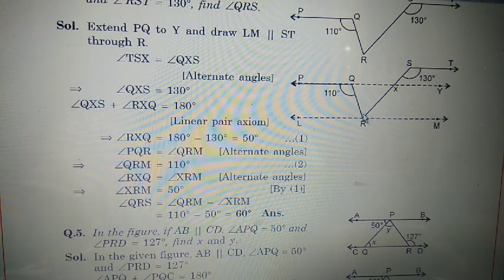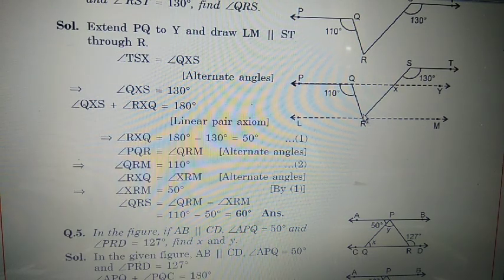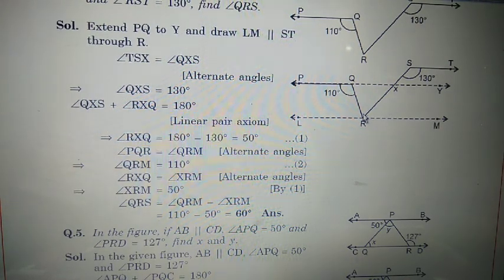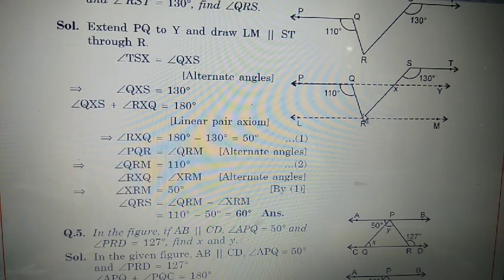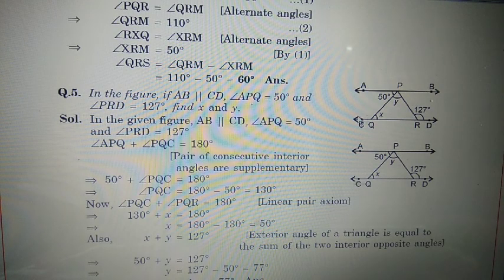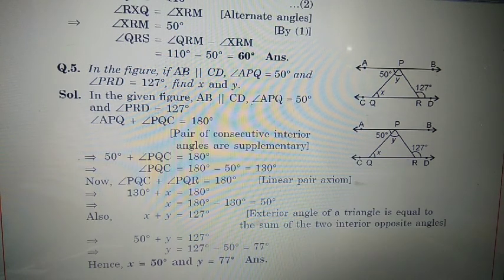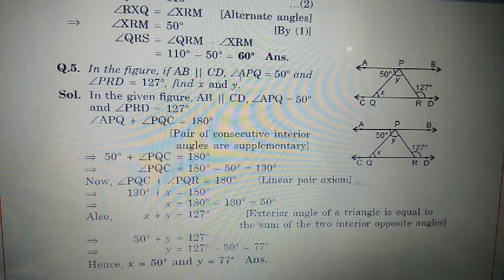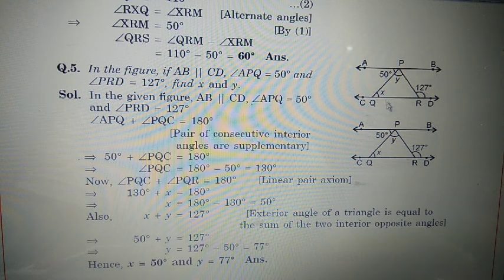If you don't understand it, watch the video again. Now pause the video and note it. Now come to Sum number 5. In this figure, if AB is parallel to CD, angle APQ is 50 degrees and angle PRD is 127 degrees — we have to find X and Y, which we can find very easily.